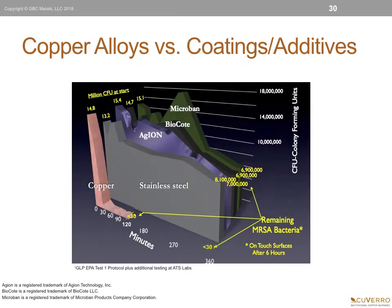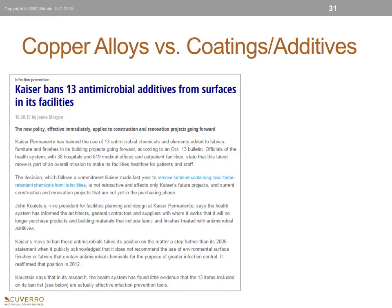The graph below shows the efficacy test comparing copper, stainless steel, and three antimicrobials in their ability to kill bacteria. As previously shown, copper kills 99.9% of bacteria within two hours, while stainless steel and the three antimicrobials show no bactericidal benefit. This is a very important distinction: copper alloys kill bacteria, while coatings and additives only protect the surfaces themselves from odors and stains, and do not kill bacteria on contact.